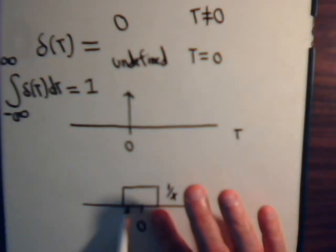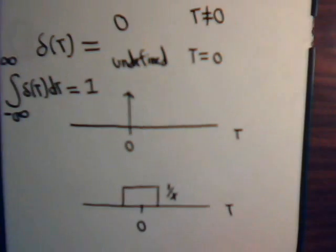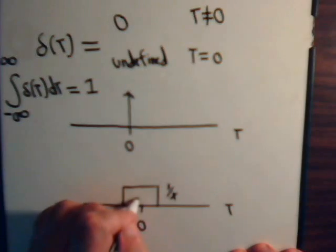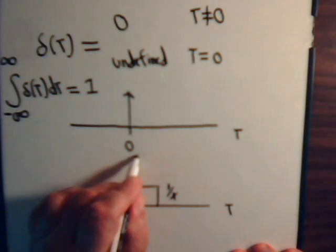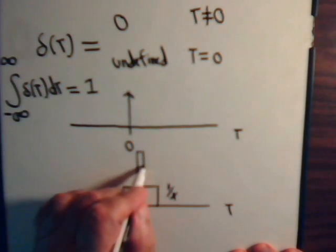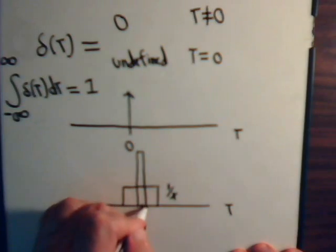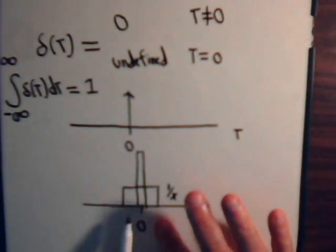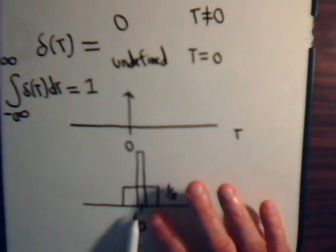Now, if we compress this together so it gets narrower and narrower, then the rectangle is going to get higher and higher, still with an area of 1.